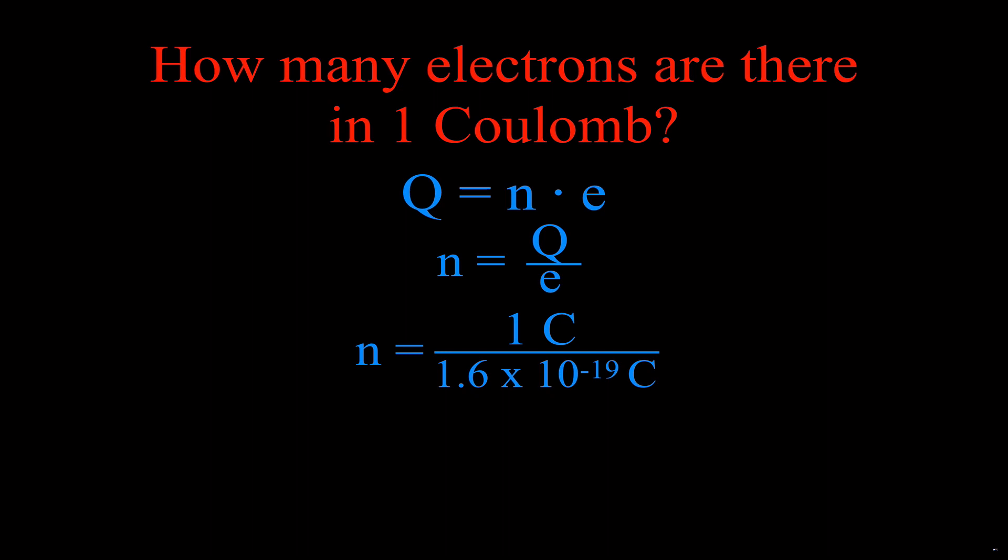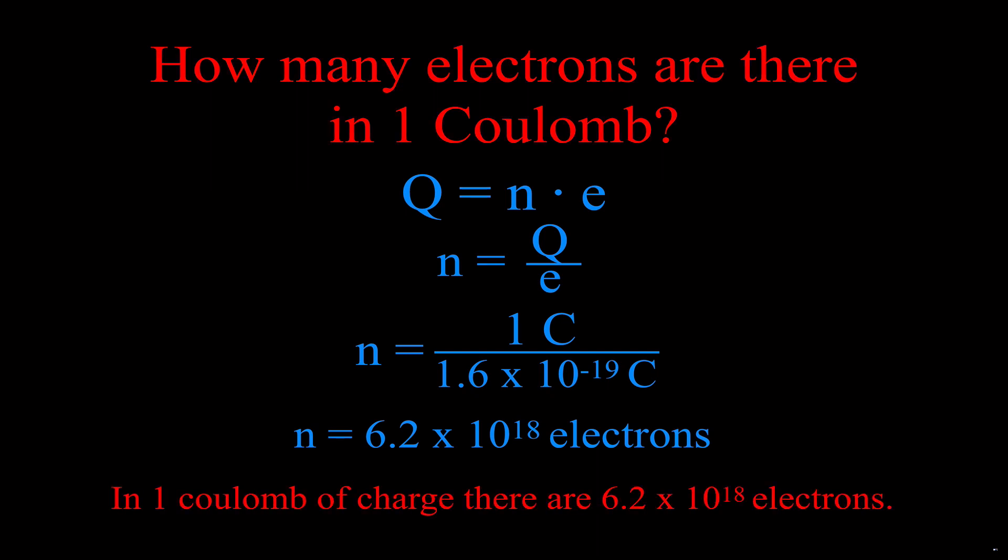If we take that whole thing, one coulomb, and divide it by the pieces or the value of one piece, then we would get that in one coulomb of charge there are 6.2 times 10 to the 18 electrons.